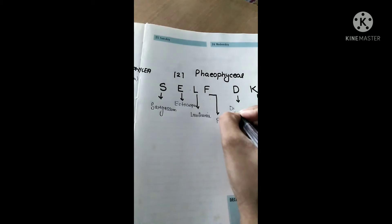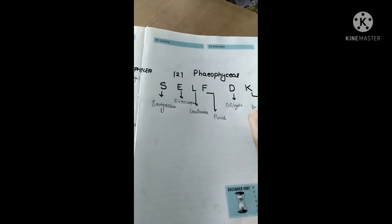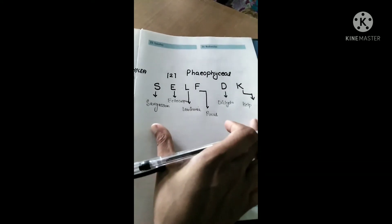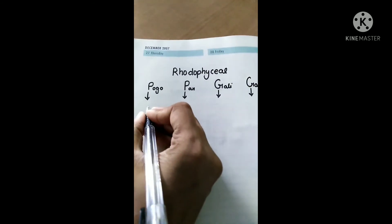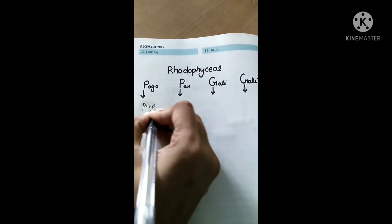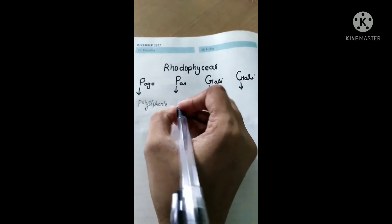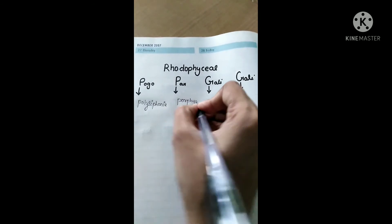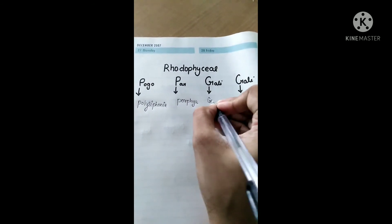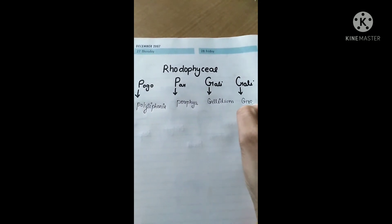Now come to the red algae, which is Rhodophyceae. P for Polysiphonia, second P for Porphyra, G for Gelidium, and the second G for Gracilaria.